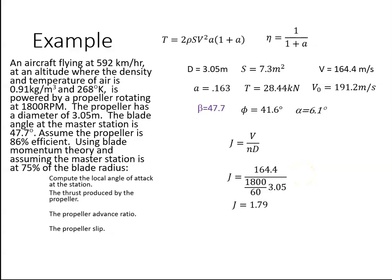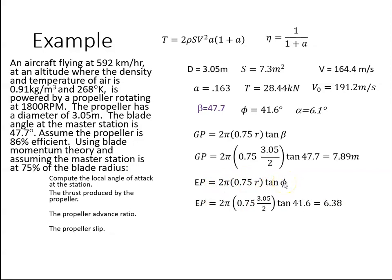Finally, the propeller slip. Slip is geometric pitch minus effective pitch. The geometric pitch is 2πr tan of the blade angle. But we're doing this at the master station, so we're going to be getting 0.75 of r. So the geometric pitch at the master station is 2π(0.75r) tan of the blade angle. The effective pitch is essentially the same, except we're using the angle of advance. We get tan of 47.7 for the blade angle and tan of 41.6 for the helix angle or angle of advance.